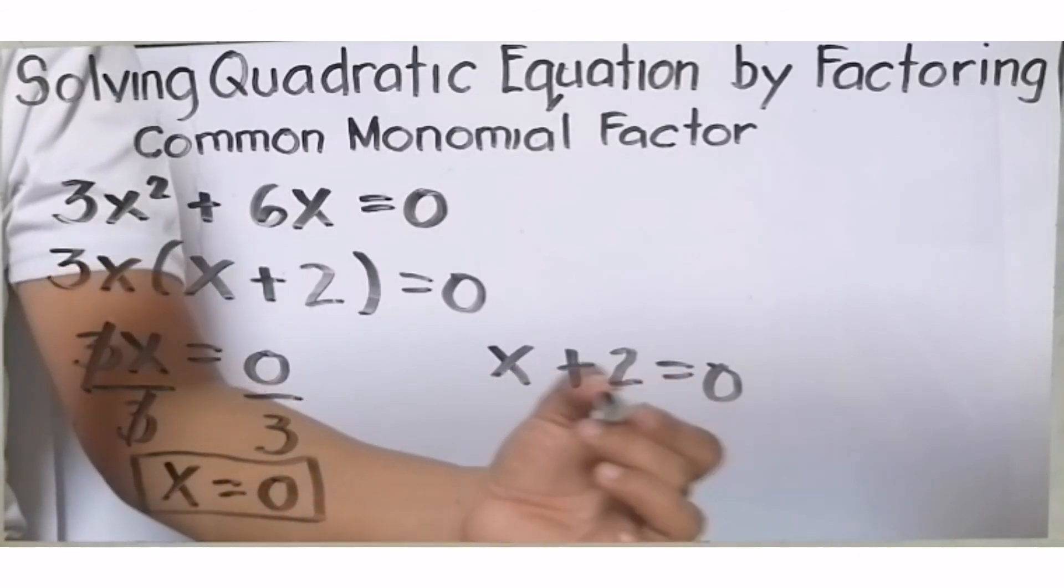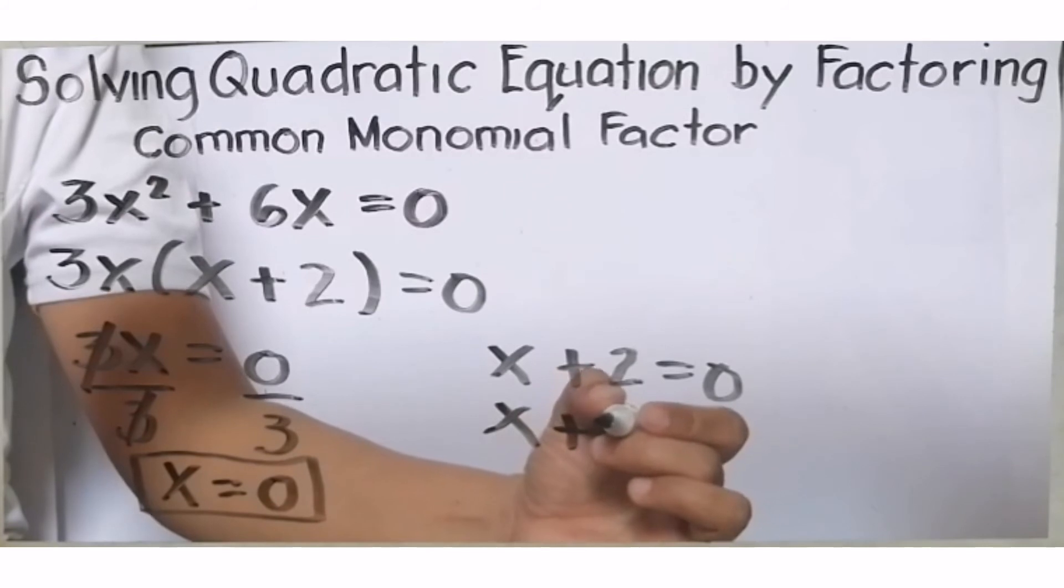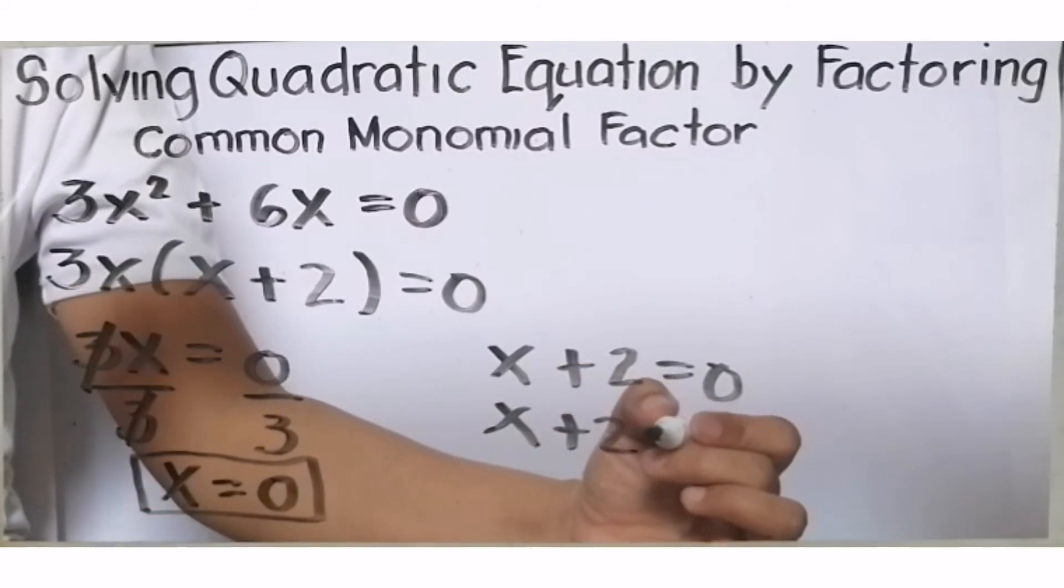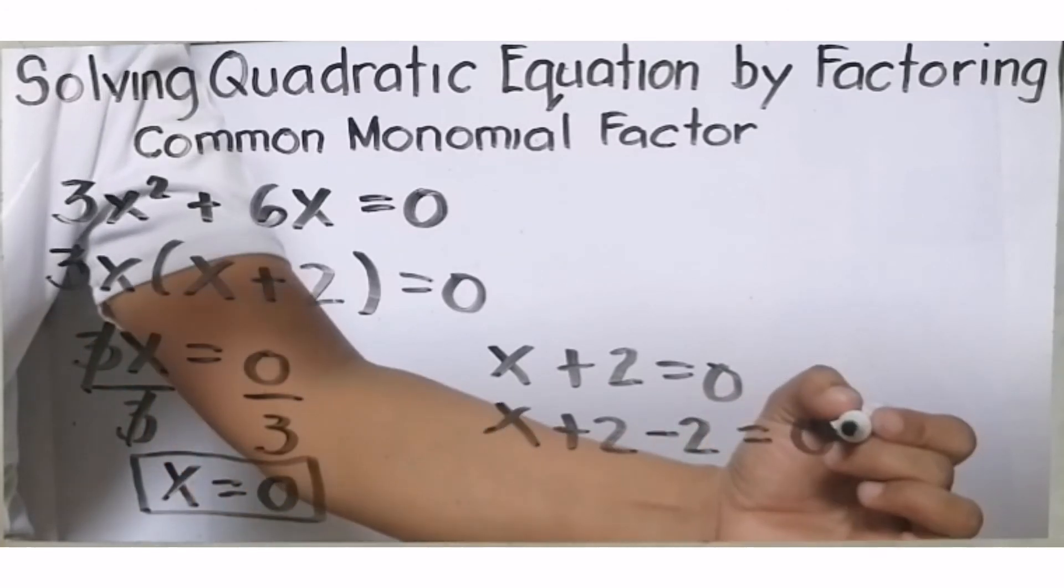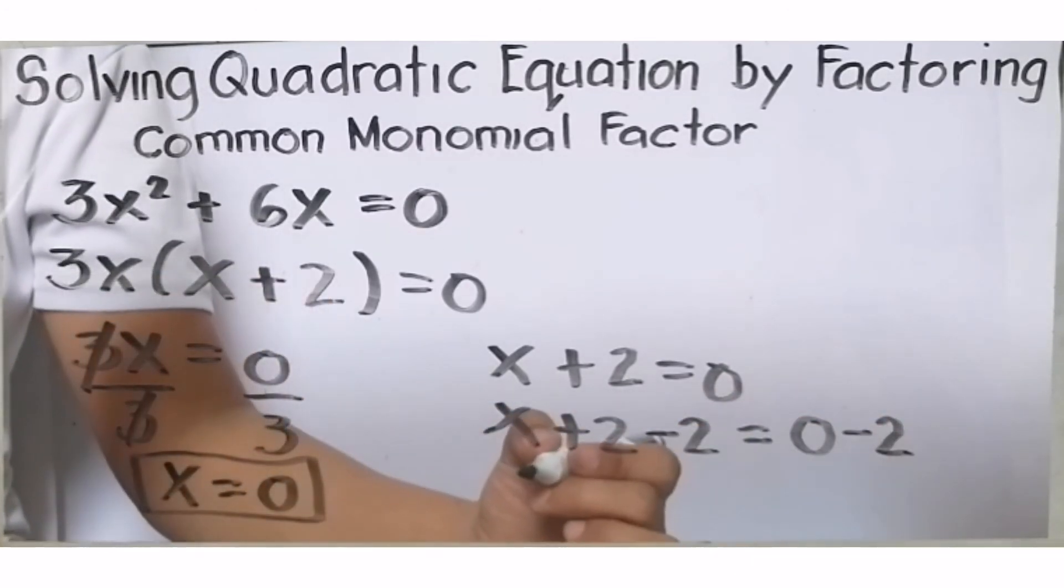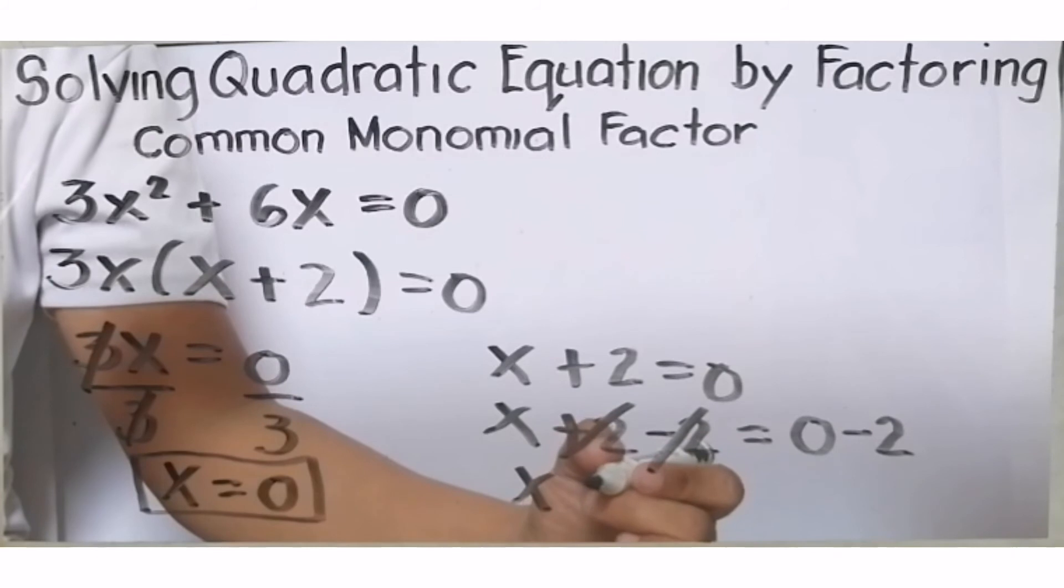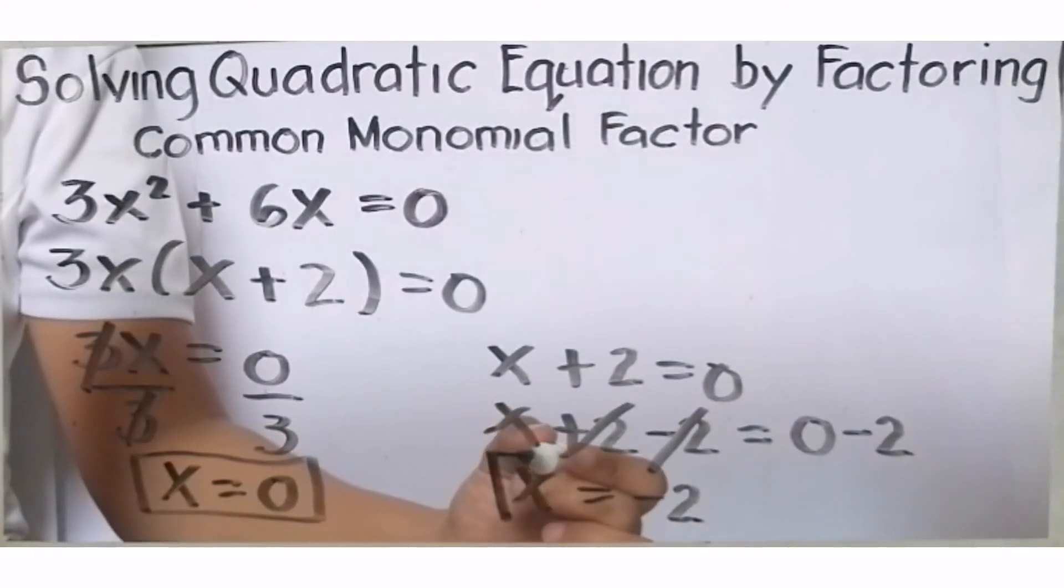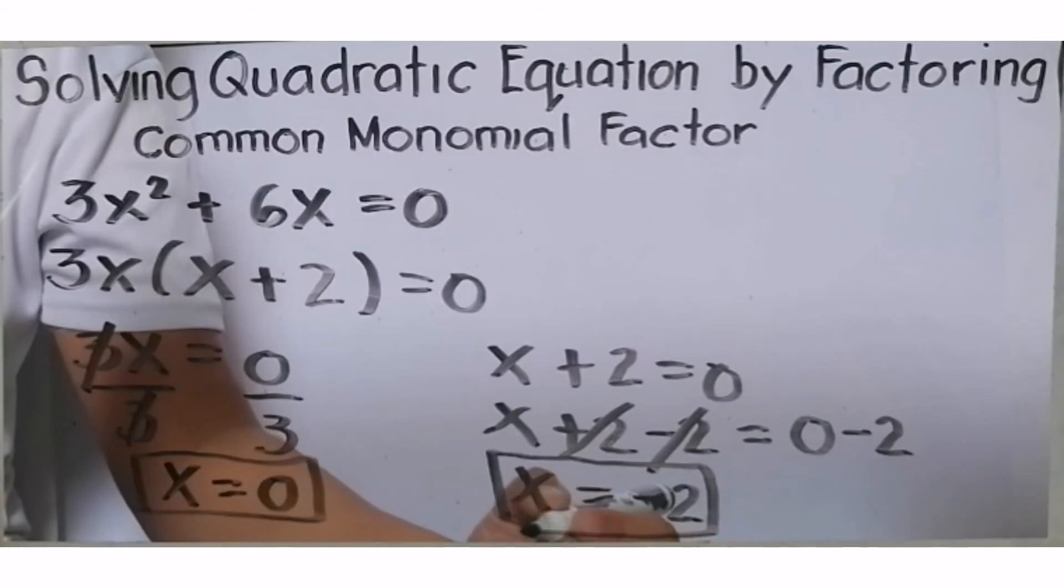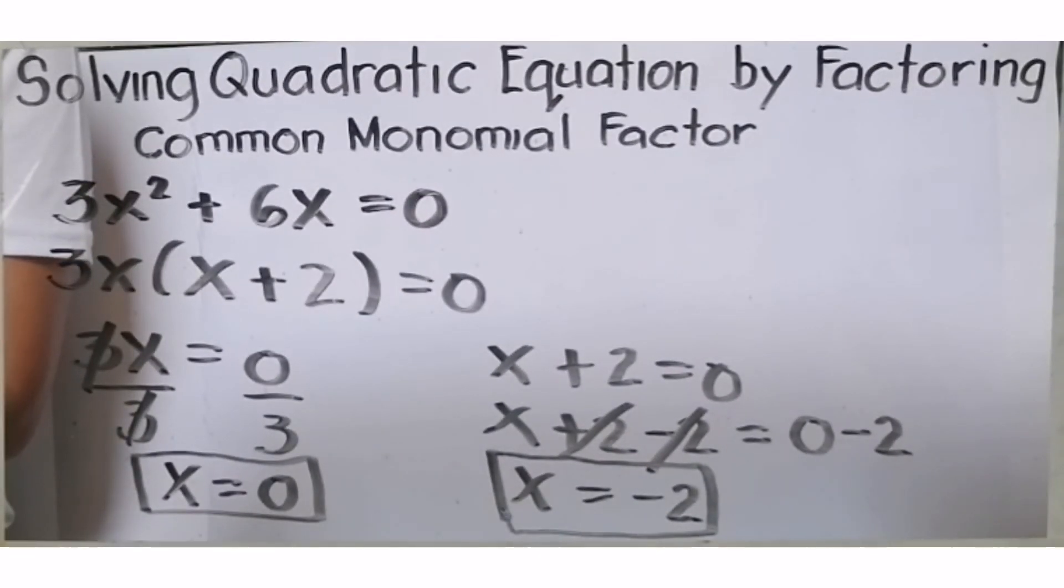Next, x + 2 = 0. By addition property of equality, ito ay x + 2, i-add natin ang inverse ng positive 2, which is -2. And do it also on the other side of the equation, 0 - 2. Makakancel ang positive 2 and negative 2 dahil ito ay 0. Therefore, x = 0 - 2 is -2. Ibig sabihin, ang other root ay -2. Ang solution sa ating 3x² + 6x = 0 ay x = 0 at x = -2.